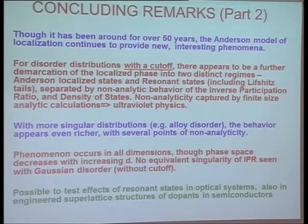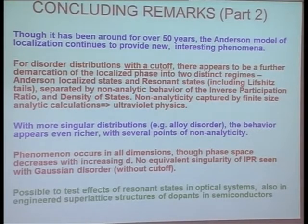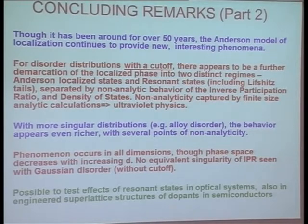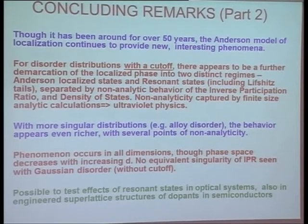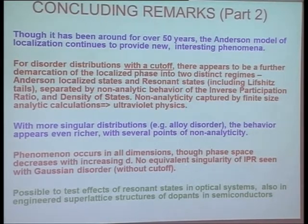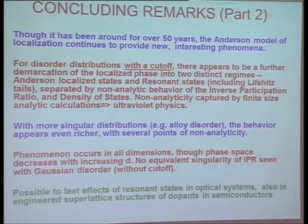Binary disorder is a can of worms — there are many separate regimes from Anderson localized states to resonant states. With more singular distributions, for example alloy disorder, the behavior appears richer with several transition points. The phenomenon occurs in all dimensions. The phase space decreases with increasing dimension as expected. There's no equivalent singularity in the inverse participation ratio seen with Gaussian disorder or any disorder that has no cutoff.